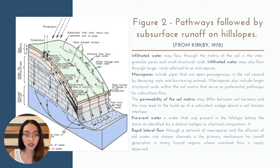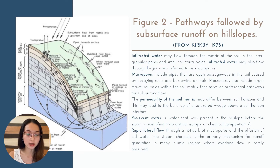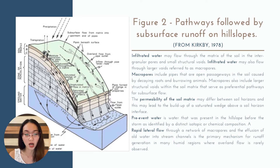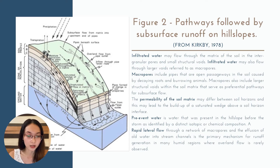Figure 2 depicts a cross section through a hillslope that exposes in more detail the pathways infiltrated water may follow. Infiltrated water may flow through the matrix of the soil in the intergranular pores and small structural points. Macropores include pipes that are open passageways in the soil caused by decaying roots and burrowing animals. The permeability of the soil matrix may differ between soil horizons, and this may lead to the build-up of a saturated wedge above a soil horizon interface. Water in the saturated wedges may flow laterally through the soil matrix or enter macropores and be carried rapidly to the stream as subsurface storm flow in the form of interflow.